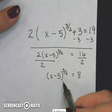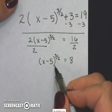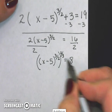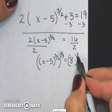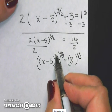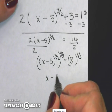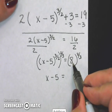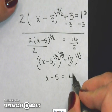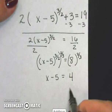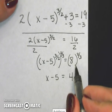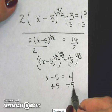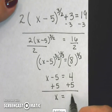Now to get rid of this power of 3 halves, I need to use the reciprocal power. So that's going to be 2 thirds. These will cancel each other out. x minus 5 is equal to, well, the cubed root of 8 is 2 and 2 squared is 4. You can always type this portion in your calculator to find the answer. Add 5 and x equals 9.